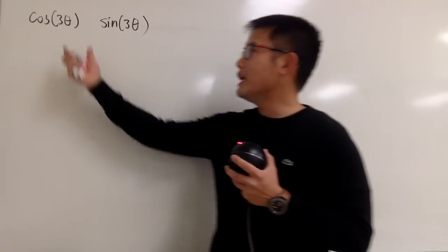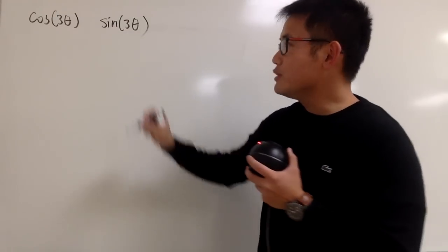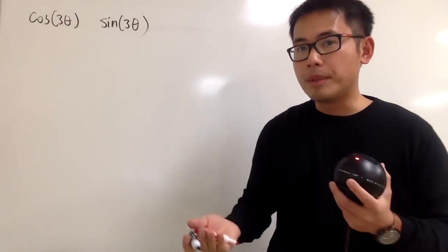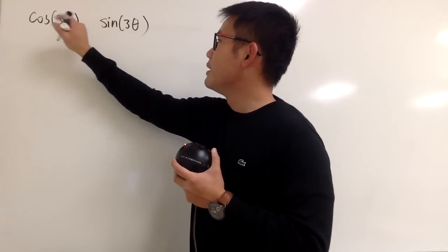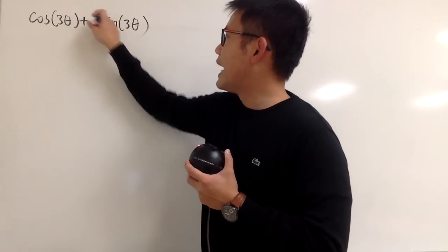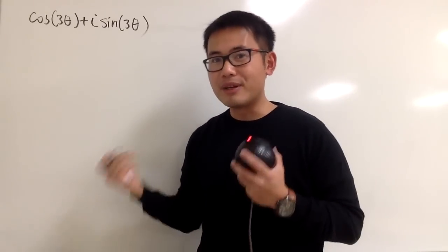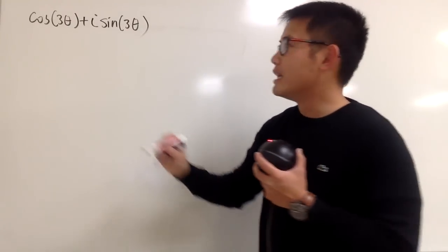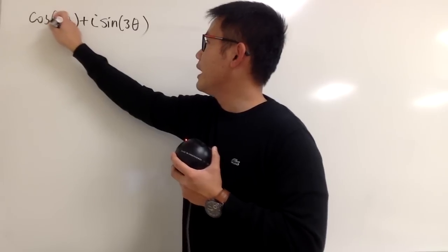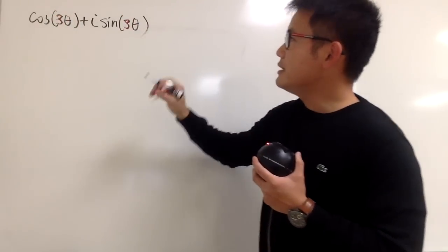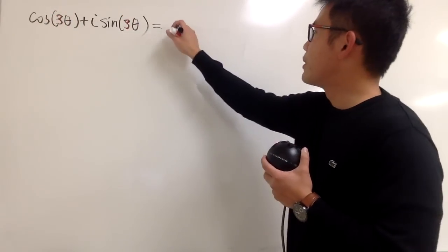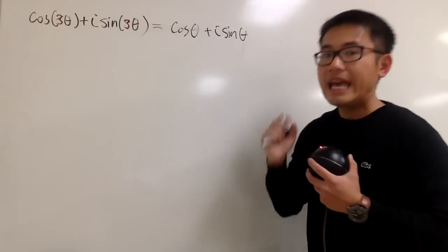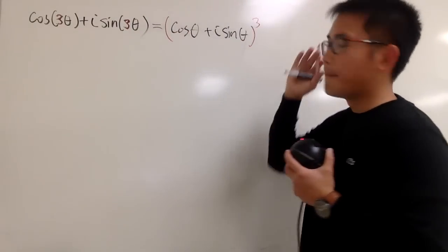When we have cosine and sine, we can treat this as a complex number — cosine as the real part and sine as the imaginary part. So we look at this as cosine theta plus i times sine theta. This is a complex number with cosine theta as the real part and sine theta as the imaginary part. And the cool thing is that if both coefficients of theta are equal to 3, this is in fact equal to the complex number cosine theta plus i sine theta raised to the third power.